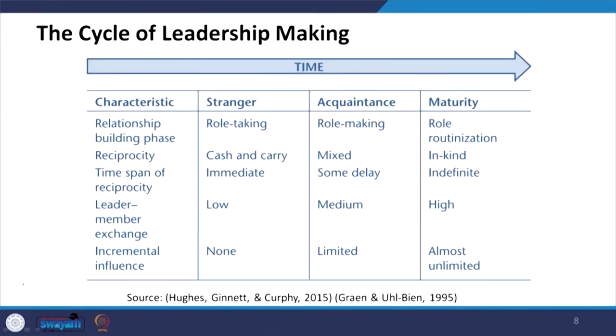Over time, there are four stages: characteristics, stranger, acquaintance and maturity. In the characteristics stage, there is relationship building phase, reciprocity, time span of reciprocity between the leader and member exchange, and incremental influence. In the stranger stage it is role taking, cash and carry immediate, and low or none. Leader member exchange is low for stranger, medium for acquaintance, and very high for maturity.